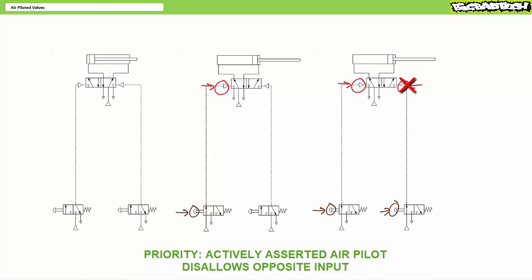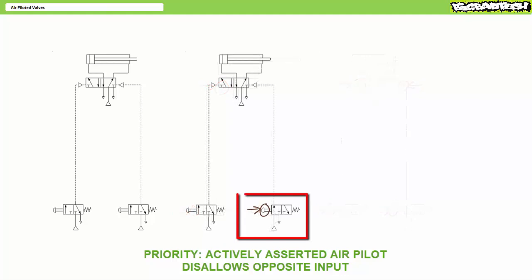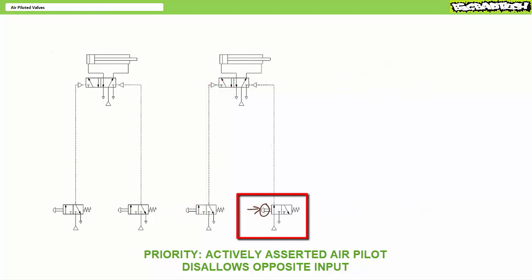Operator one got there first, so operator one's action has priority over the late-arriving operator two. Only when operator one releases push button one would it exhaust the air pilot on the left-hand side. Now operator two can press push button two and send a valid pilot signal to the air pilot on the right, and the air pilot shifts the valve into a position such that the cylinder retracts.